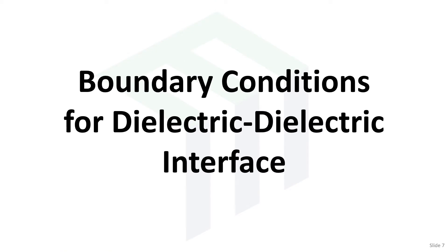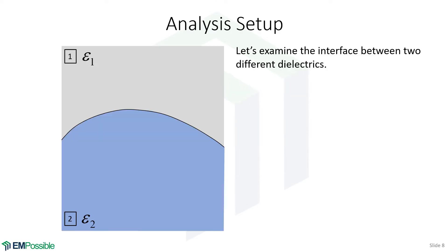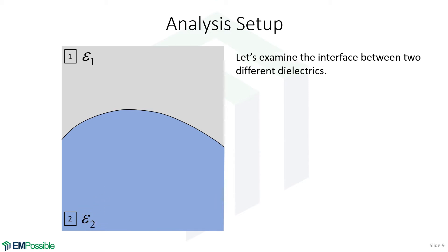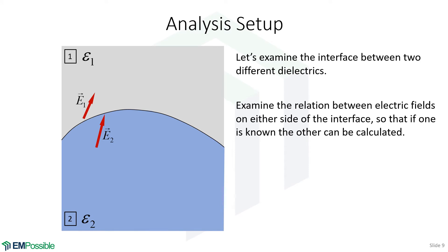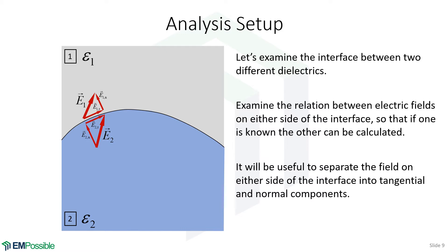Boundary conditions for the dielectric-dielectric interface. Here's the analysis setup. We have medium one described by permittivity epsilon one, and medium two described by permittivity epsilon two. We define some electric field in both mediums and want to figure out how they are related — we cannot arbitrarily choose E1 and E2; they must be related through the boundary conditions. We separate each field into its normal and tangential components and look at them separately.